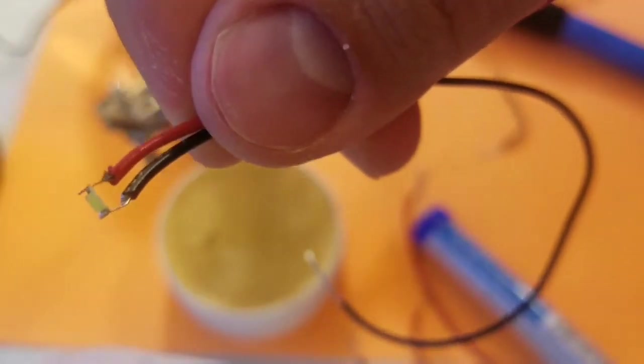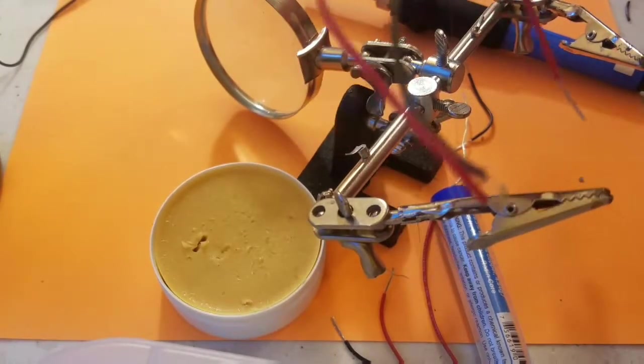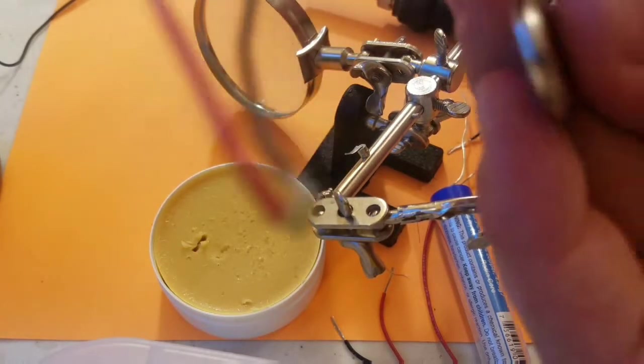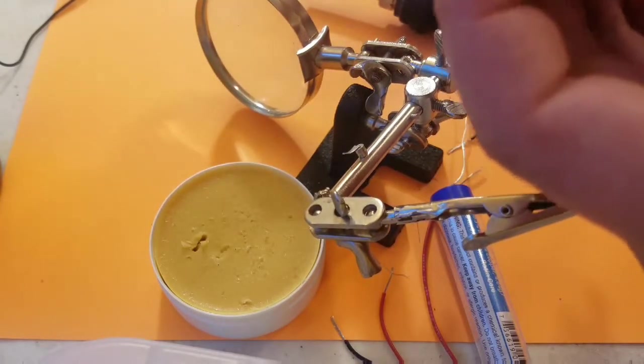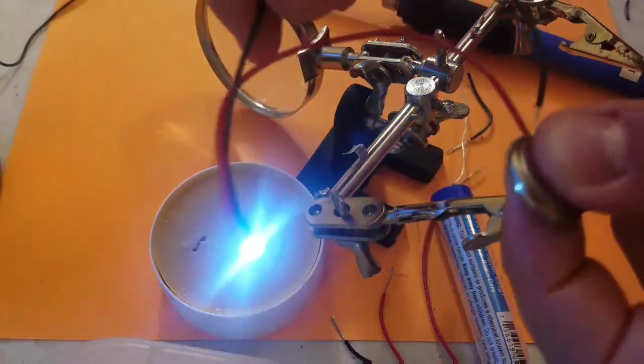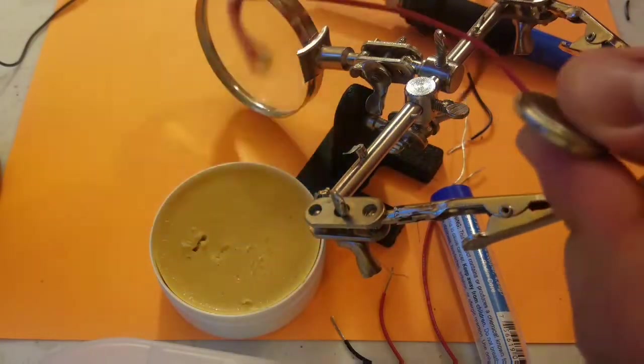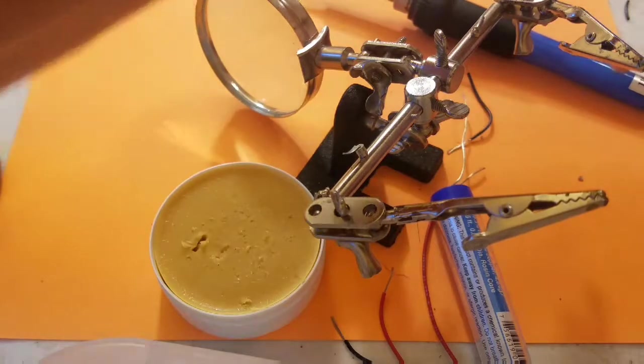As you can see the black is much better connected than the red. After redoing the first joint I'm going to go ahead and test it to make sure that I have continuity throughout the entire LED. Using a standard battery makes it super simple to make sure it turns on.